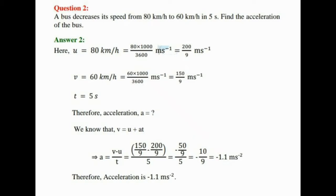Here, u is equal to 80 km per hour, which will equal to 80 into 1000 divided by 3600 meter per second minus 1, which will equal to 200 by 9 meter second minus 1.